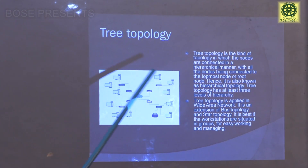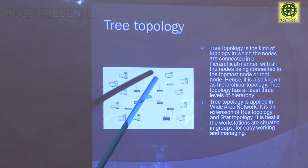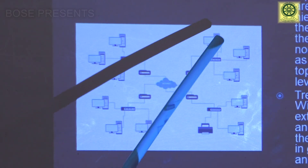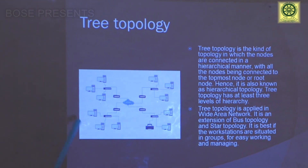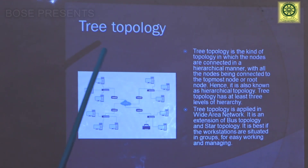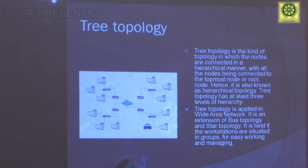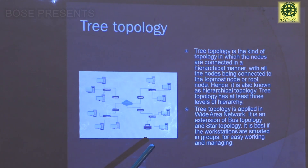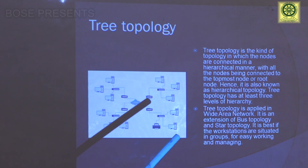This is the physical diagram of a tree topology where these are the nodes, which can be described as the hub, connected with additional sub-hubs. These sub-hubs provide connection to different computers, and these devices can be connected to provide a configuration like tree topology. Tree topology is a kind of topology in which nodes are connected in a hierarchical manner, and this hierarchy may continue up to tree level. Tree topology is applied in wide area networks; it is an expansion of bus topology and star topology, and it is best suited to the workstation model of a network.